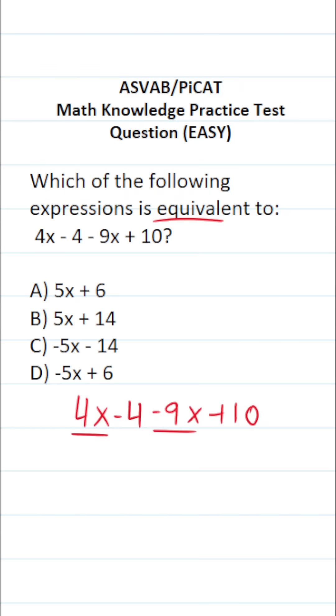So 4x and negative 9x are like terms. 4x minus 9x is going to be negative 5x. Now that I've combined those like terms, I'm going to cross them out.